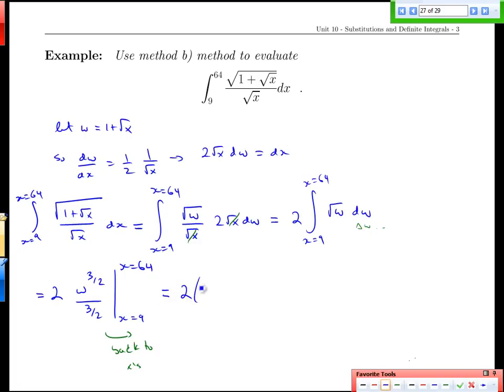So we'll have 2 times the 2 thirds, that's the 1 over 3 halves, and w was 1 plus root x, and that is going to be evaluated between x equals 64 and 9. And now everything's ready - we've got x and x, x in our limits, x in our function, now we can sub in. We'll have 4 thirds all times 1 plus the root of 64 to the 3 halves minus 1 plus the square root of 9 to the 3 halves.